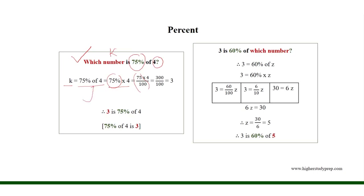75% of 4 equals 75 times 4 over 100, which results in 3. Therefore, 3 is the number which is 75% of 4. That is, 75% of 4 is 3.